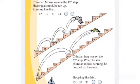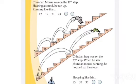Chintan Frog was on the 25th step. When he saw Chintan Mouse running, he hopped up the steps. First he was on the 25th step, then he moved to 30, then 35, then 40 — by skipping five steps each time, he is jumping up.